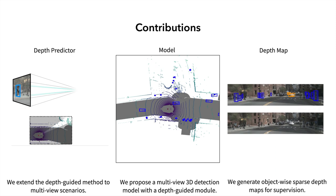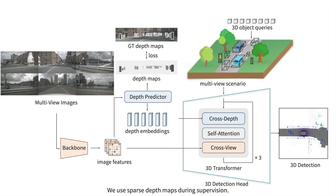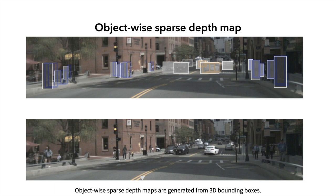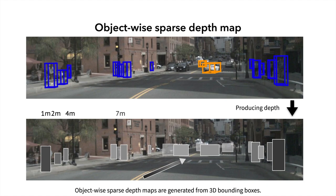Third, we generate object-wise sparse depth maps for supervision. These sparse depth maps are generated from 3D bounding boxes.